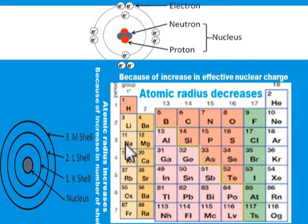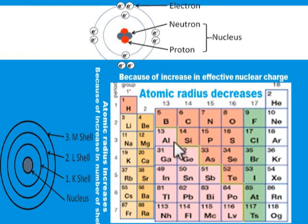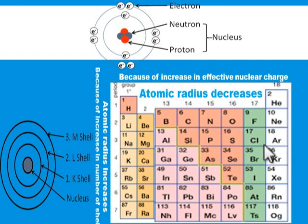Let's consider period 3. In period 3 we have sodium, magnesium, aluminum, silicon, phosphorus, sulfur, chlorine, and argon. If you move from left to right, sodium will have the highest atomic radius, followed by magnesium, then aluminum, then silicon — decreasing in that order. This is because as we move across the period, the effective nuclear charge is increasing, and the increase in effective nuclear charge leads to the reduction or decrease in atomic radius.